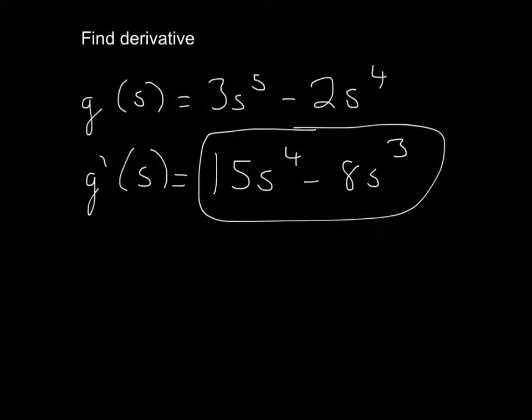So in this problem, they just want you to find the derivative, and so the problem is 3s to the 5th power minus 2s to the 4th power.